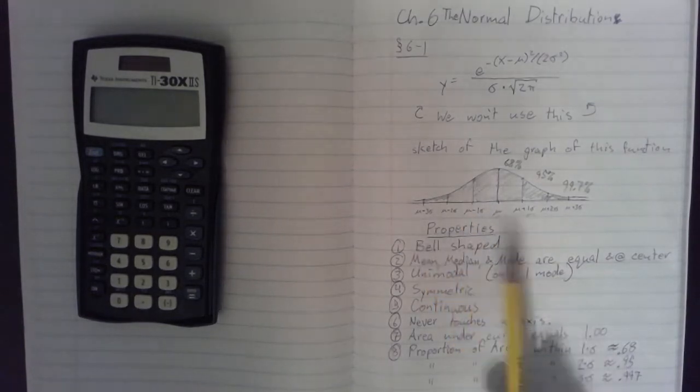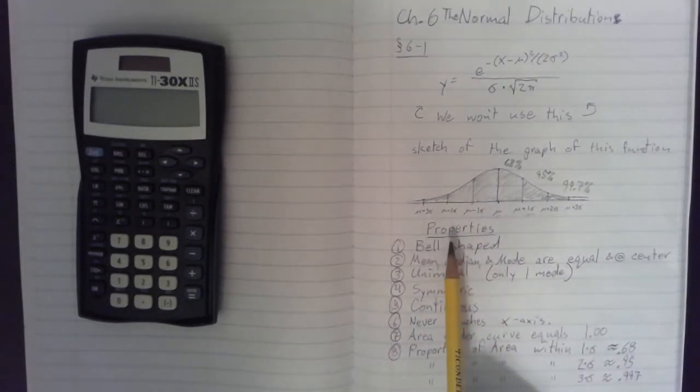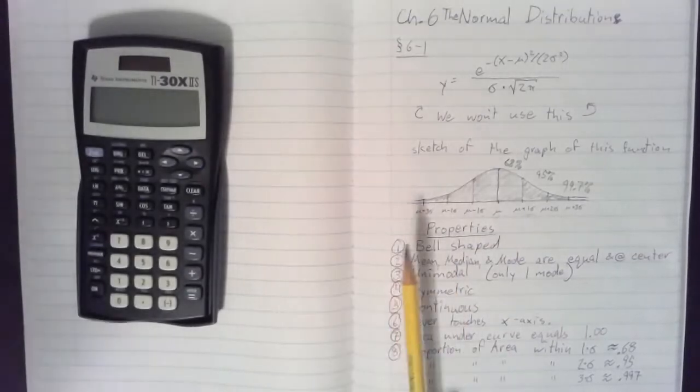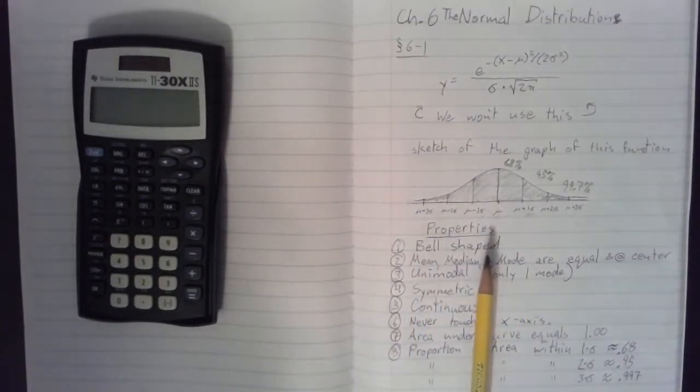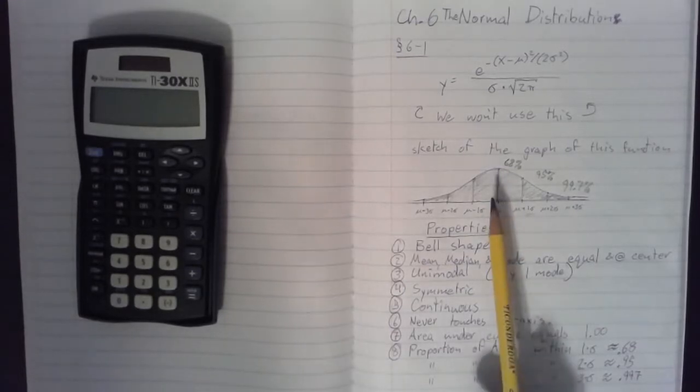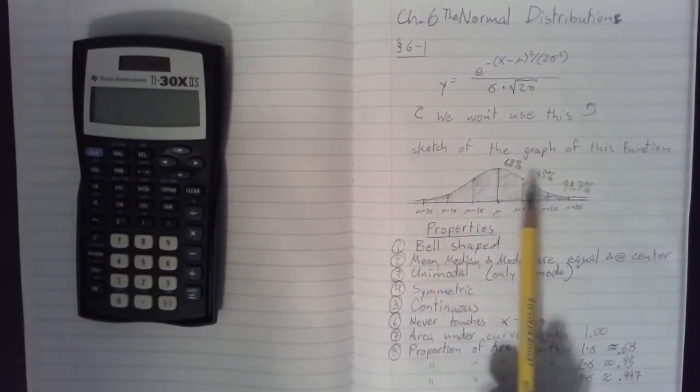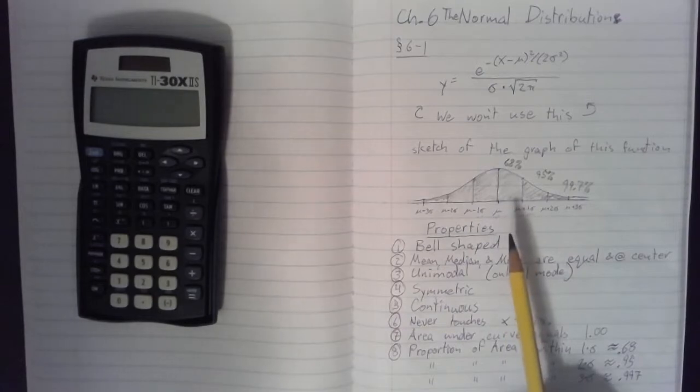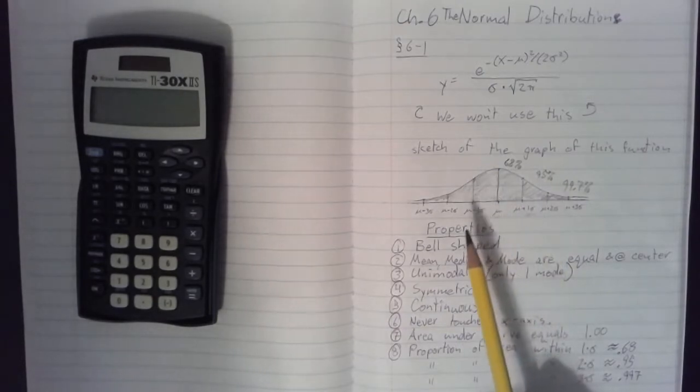Now, we're going to go over some various properties of the Normal Distribution curve. Property number one, it is bell-shaped. So it's the highest in the middle, and then it slopes down on the left and right sides pretty fast.